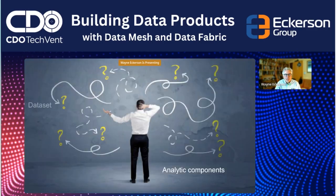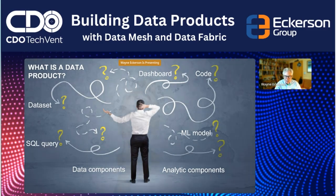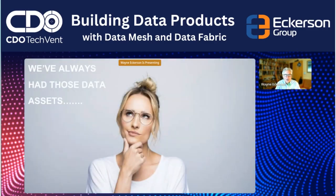In talking about data products at events and reading things online, I've discovered there's a lot of confusion about what they are. Are they dashboards? Are they code? Are they ML models, analytic components, data components, SQL queries, or data sets? Well, yes, I guess. But haven't we always had these things? So I started to ask myself: if we already had these data assets, why are we calling them data products now? What's really changed? What's new?